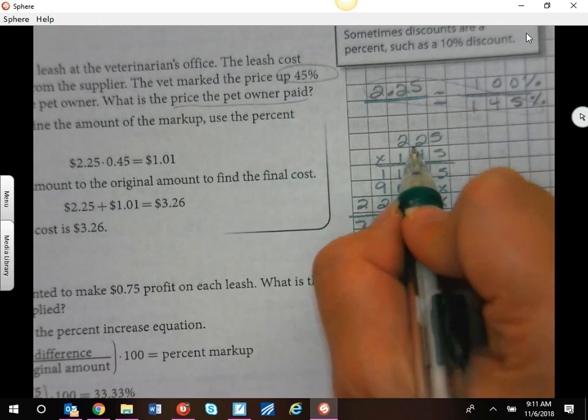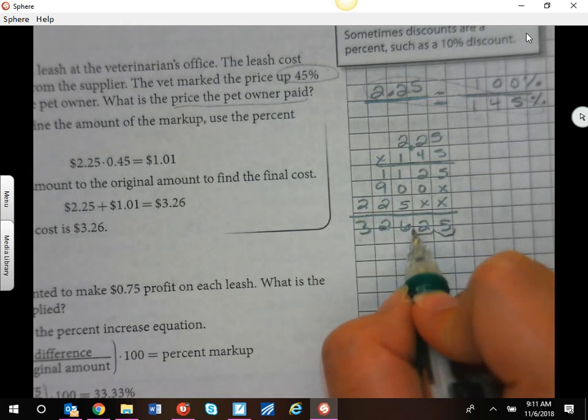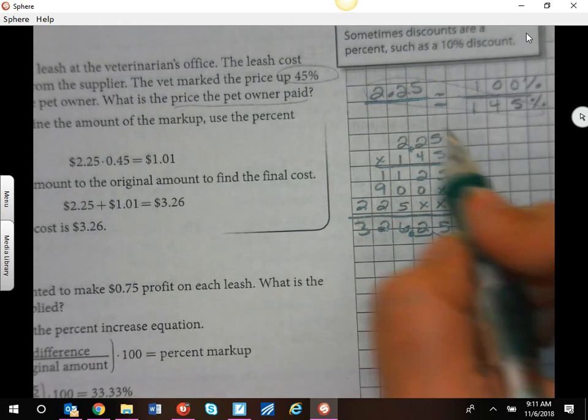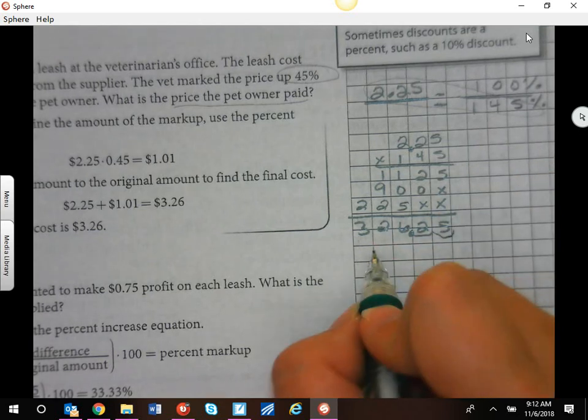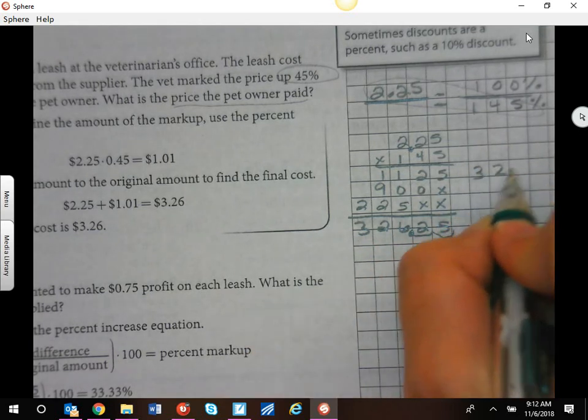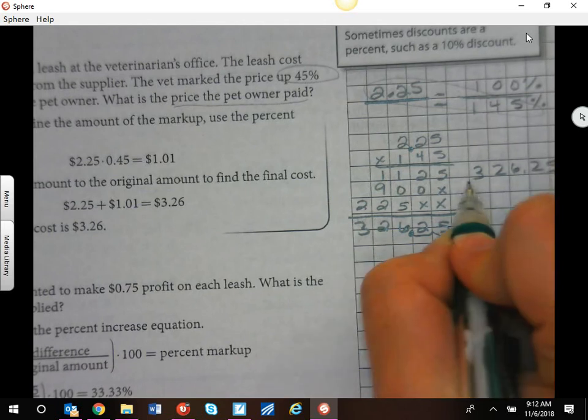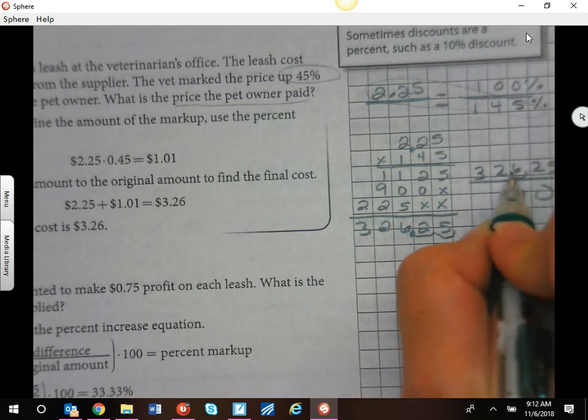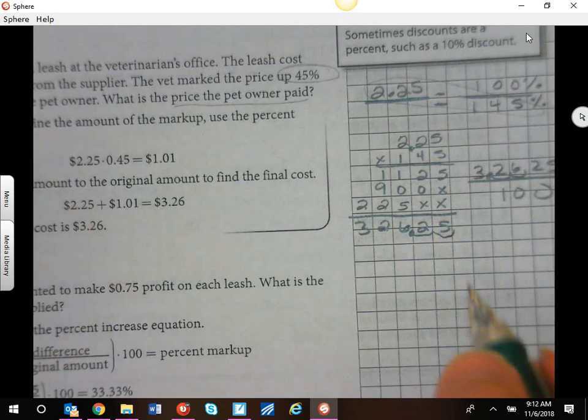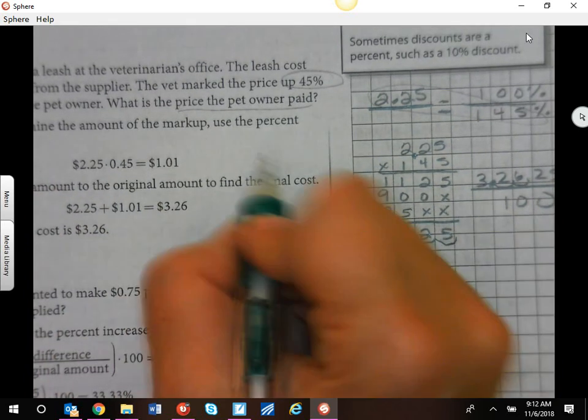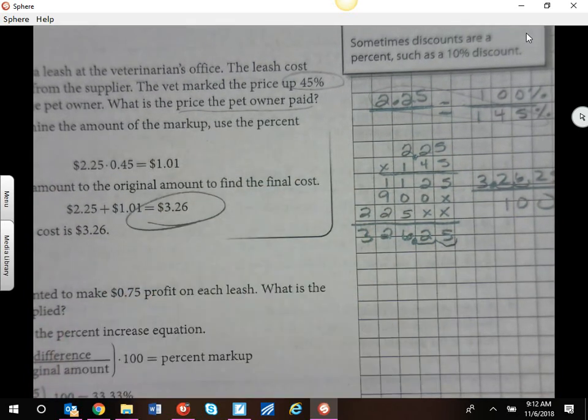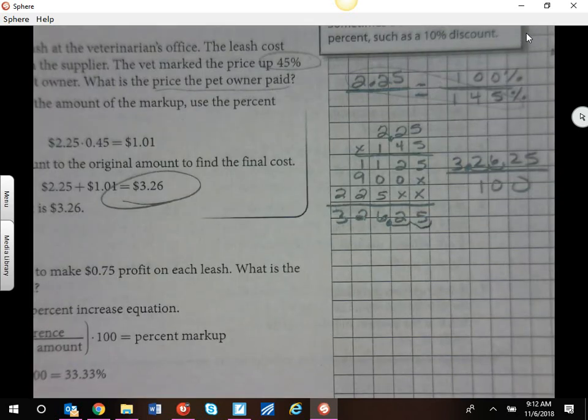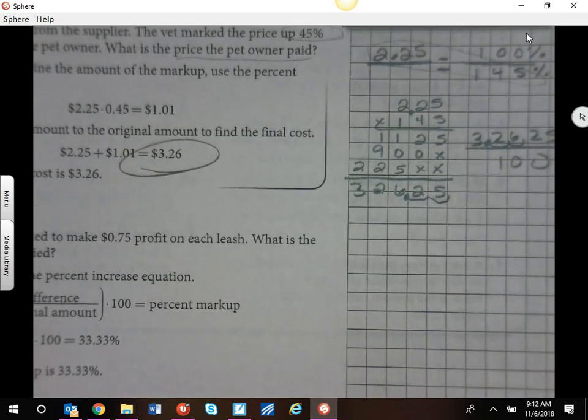When we divide that by 100, $326.25 divided by 100, we know that's going to move two more places. So we are going to end up paying $3.26. You could find 45% and add it to the $2.25.